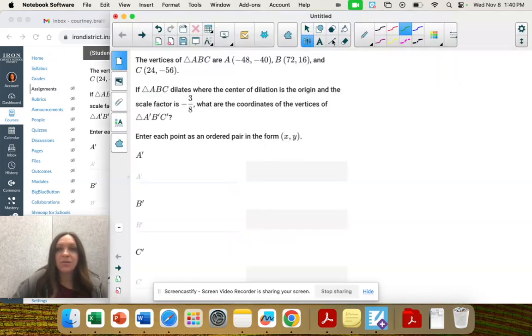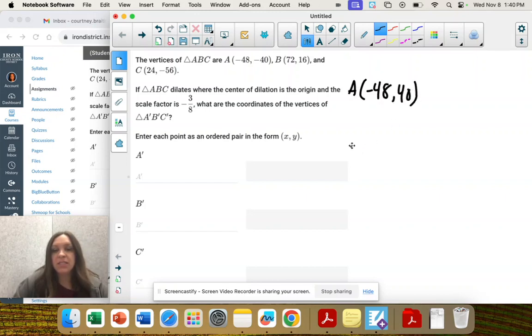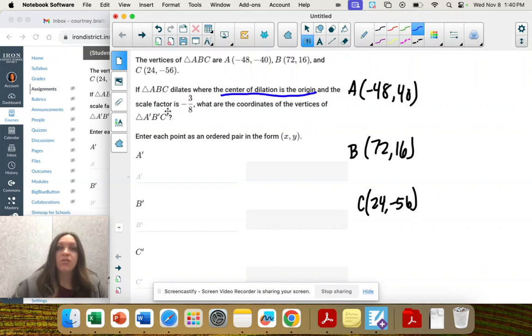So question 9 is what we've been doing. We're given 3 points, ABC, and it's being dilated through the center, through the origin. That means that to find our new points, we multiply by the scale factor. So I'm going to multiply all of these by negative 3 eighths to get our new points.